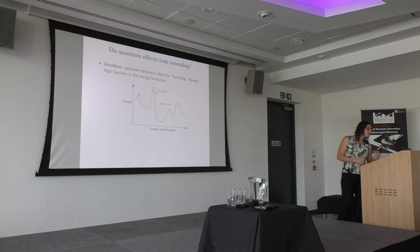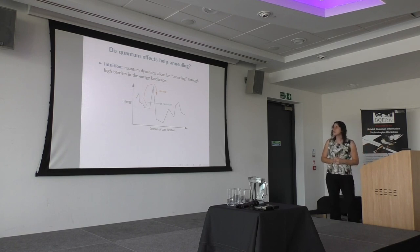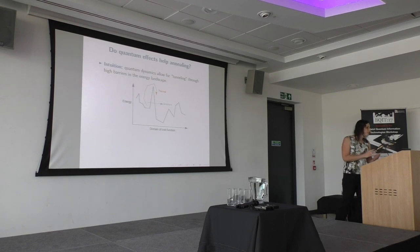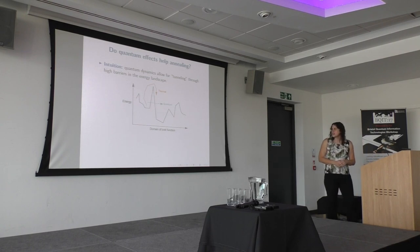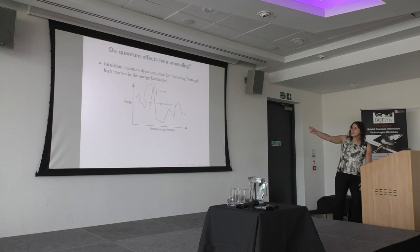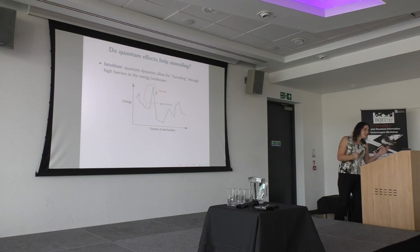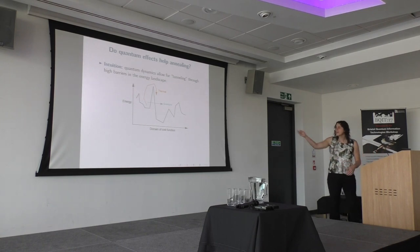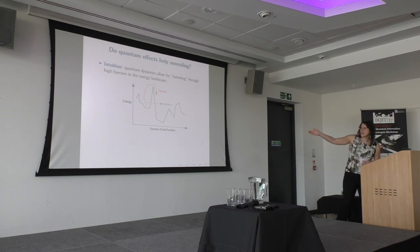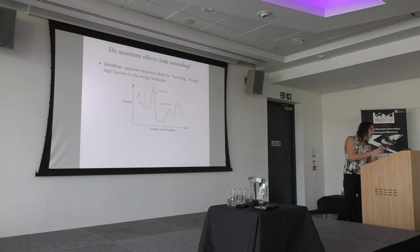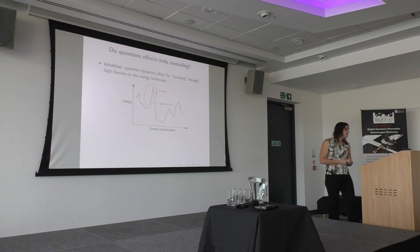Couldn't these quantum effects help us? An important intuition is that quantum dynamics might be able to tunnel through energy barriers that would take a long time to climb over using thermal fluctuations. Imagine you're a small particle in a local minimum, just bouncing around with thermal fluctuations — it might take a very long time to climb over a barrier and find the true global minimum. Using quantum dynamics, you might be able to pass through this barrier more efficiently. If it's not too wide, you might have a decent probability of tunneling through that forbidden region to arrive on the other side.